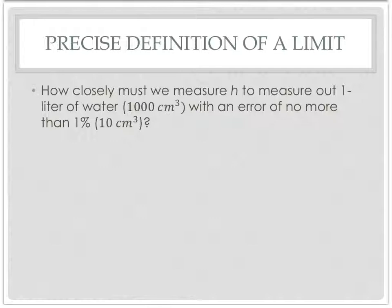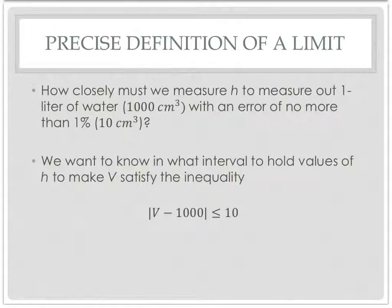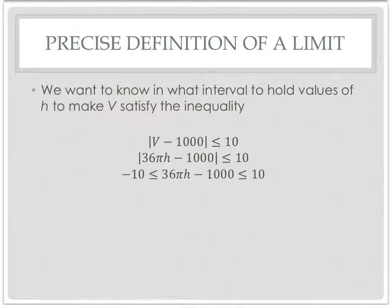How closely must we measure h to measure out one liter of water, or a thousand cubic centimeters, with an error of no more than 1%? This is what I keep telling you with the h value. What do I pick for h? Well, in a perfect world, you want it to go to zero. It's not a perfect world. Can I live with 1%? And that's my question here: is 1% good enough? If it's not, then you may run the test again if you could get it a little bit less, a half a percent.